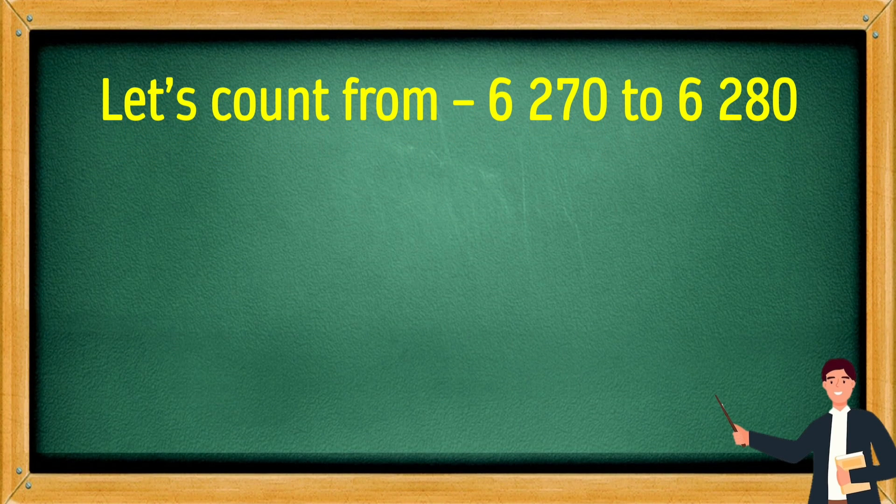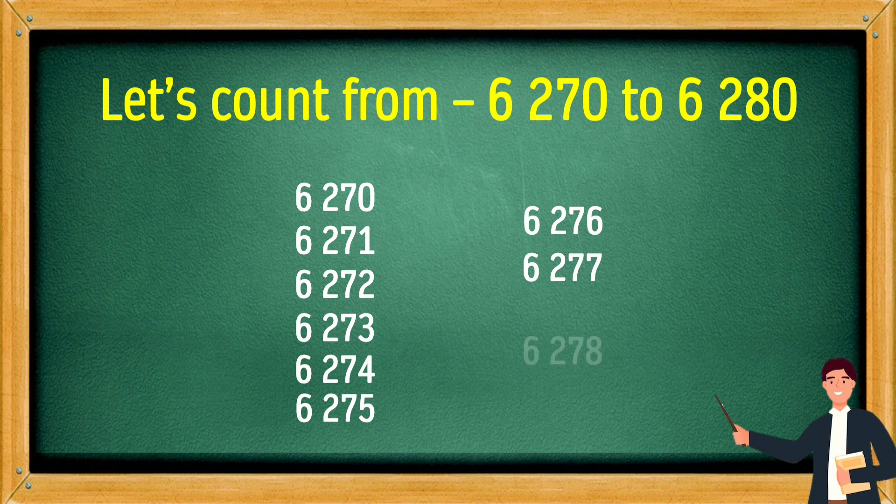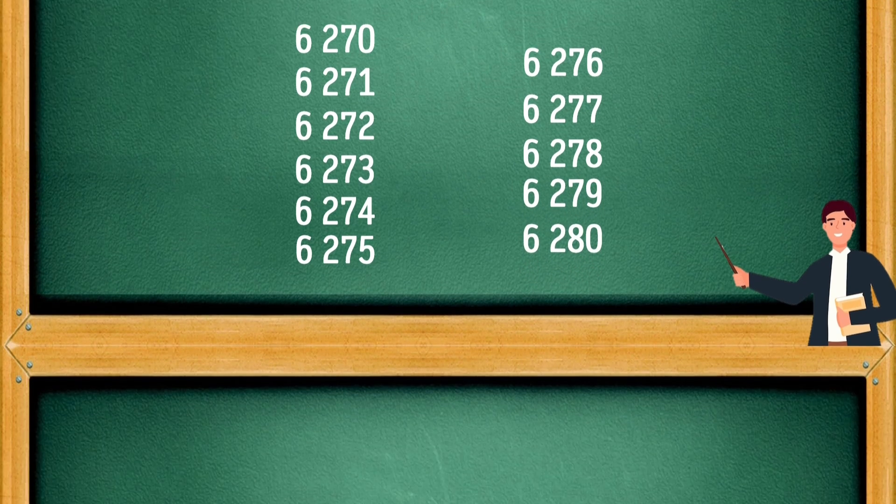Let's count from 6,270 to 6,280. 6,270, 6,271, 6,272, 6,273, 6,274, 6,275, 6,276, 6,277, 6,278, 6,279, 6,280.